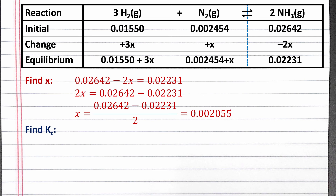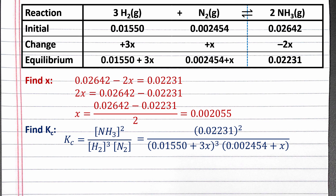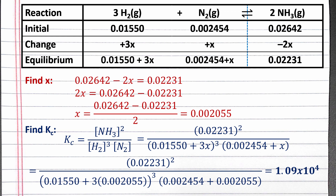Now we can solve for the equilibrium constant Kc, which equals the concentration of ammonia squared divided by the concentration of hydrogen cubed and the concentration of nitrogen. We plug in the values from our equilibrium row to calculate Kc. Substituting in the value of x that we calculated, we should get 1.09 times 10 to the fourth for the value of Kc.